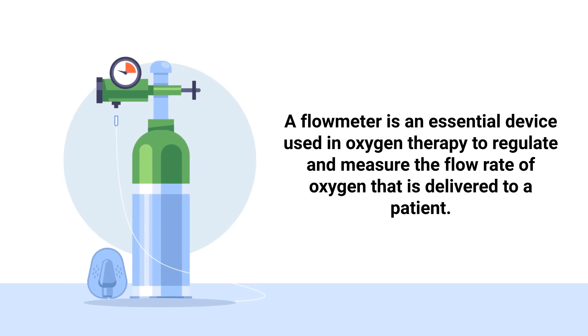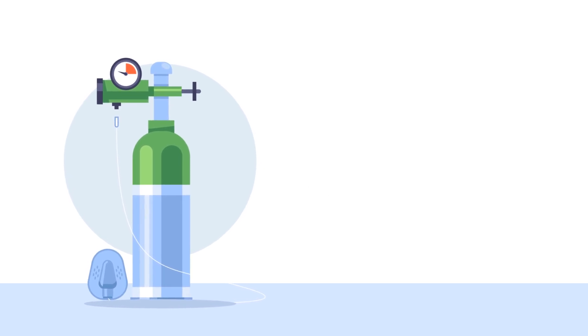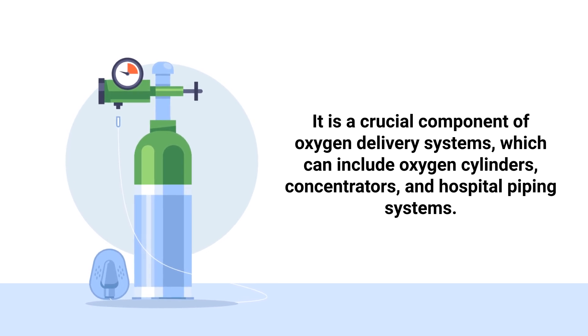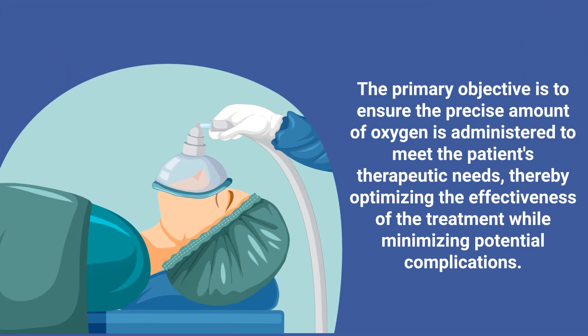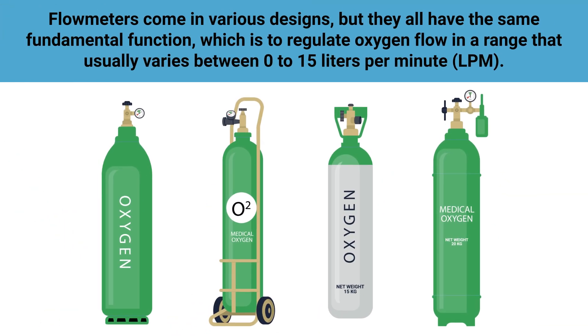A flow meter is an essential device used in oxygen therapy to regulate and measure the flow rate of oxygen delivered to a patient. It is a crucial component of oxygen delivery systems, which can include oxygen cylinders, concentrators, and hospital piping systems. The primary objective is to ensure the precise amount of oxygen is administered to meet the patient's therapeutic needs, optimizing treatment effectiveness while minimizing potential complications.